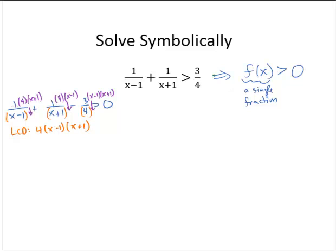So that would give me 1 times 4 times x plus 1—that would be 4x plus 4 over the LCD—plus 1 times 4 times x minus 1—that would be 4x minus 4 over the LCD—minus 3 times x minus 1 times x plus 1, that would be 3x squared minus 3 over the LCD. And that's all greater than 0.